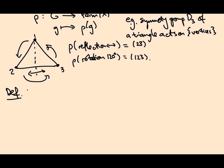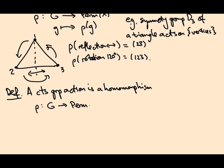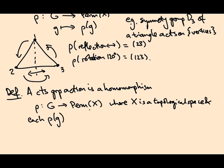So, definition: a continuous group action is a homomorphism. So it's a group action on a topological space X. And crucially, each map rho of g, each permutation, is a homeomorphism of X.